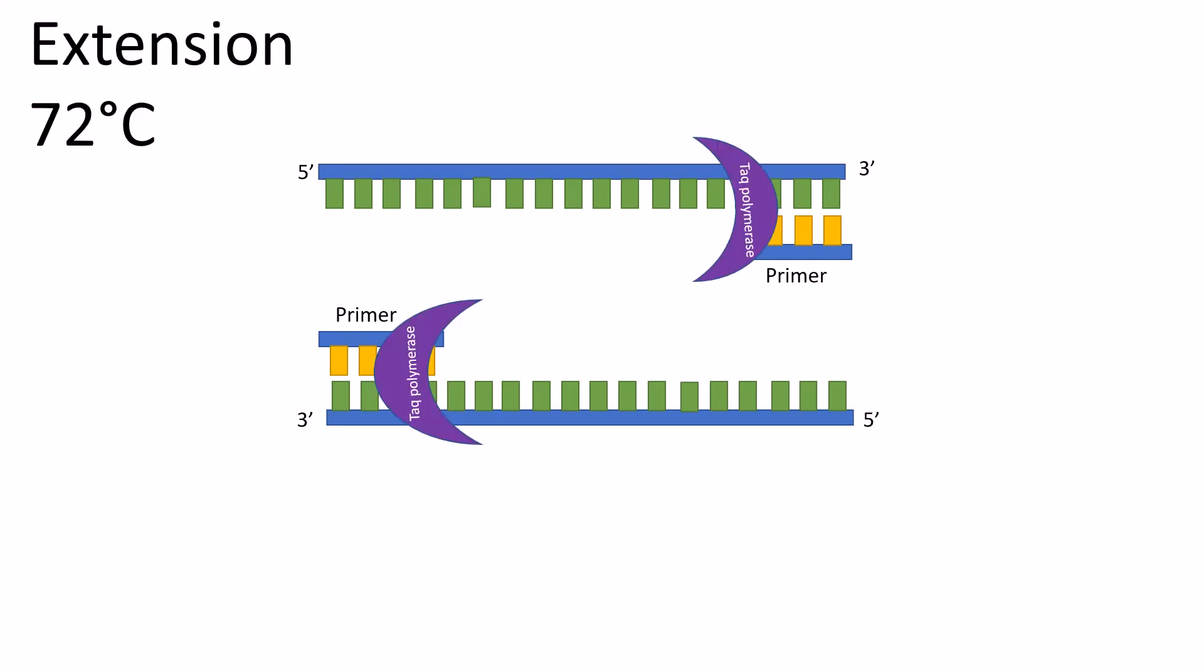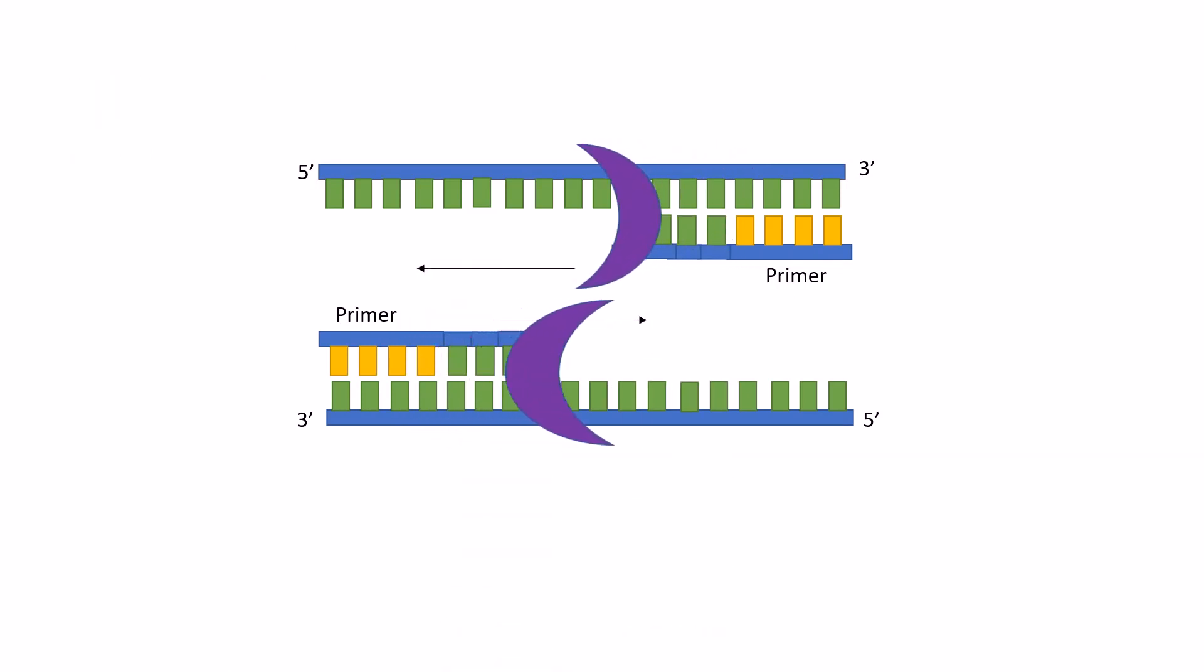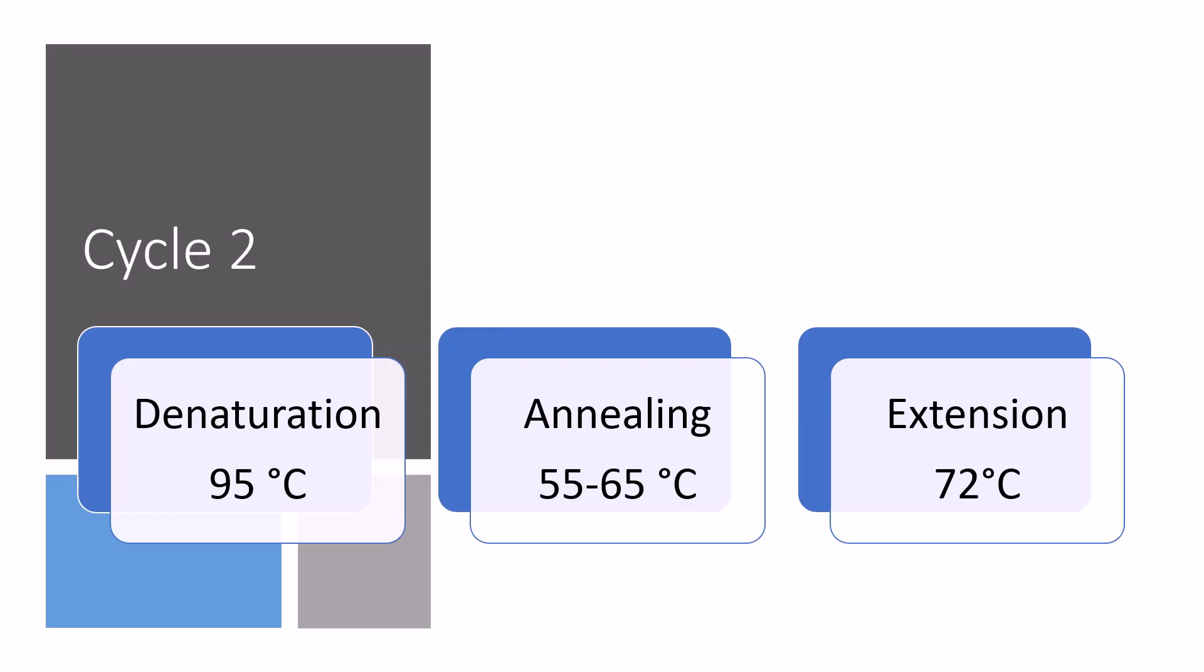In the third step, temperature is raised to 72 degrees Celsius where the Taq polymerase begins adding free nucleotides onto the ends of the annealed primers. Then the process begins again.